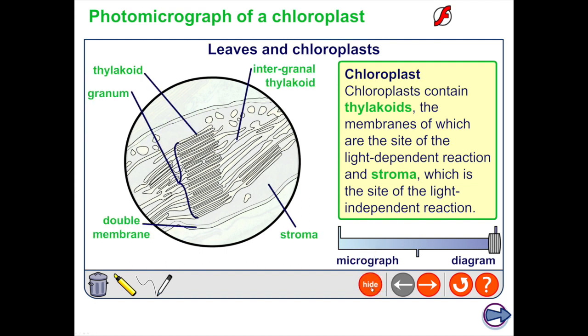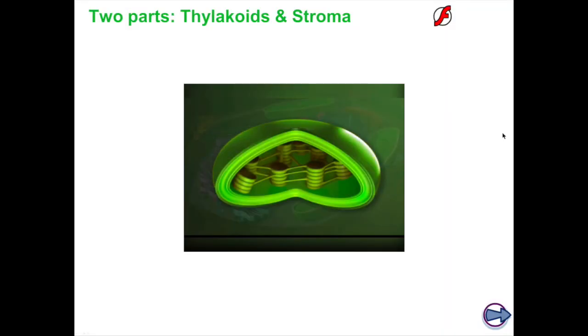These internal membranes are known as the thylakoids. Thylakoids is where most chlorophyll is found, and this is where the absorption of light is happening. As you can see here, the membranes of the chloroplasts are permeable to gases, so they allow the entry of carbon dioxide into the leaf and oxygen to diffuse out.